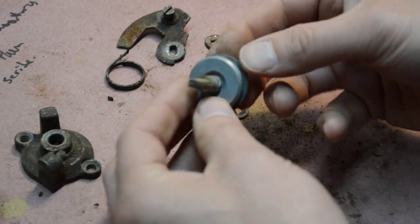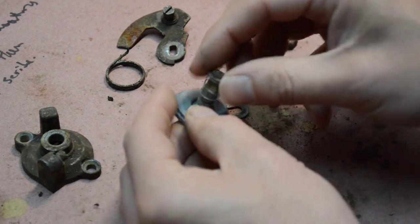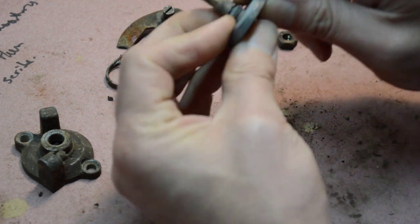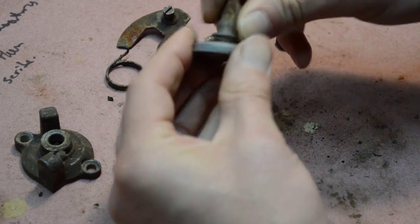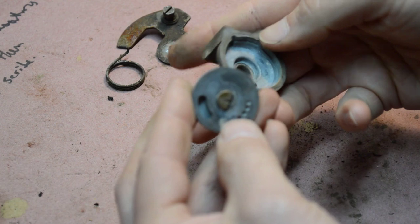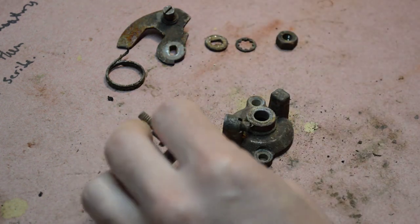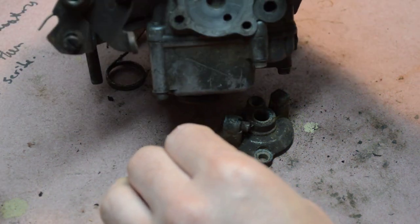And then from that point you are ready to reassemble it. So when you do that spring back on, get the clip in. Okay I have already forgotten which way this goes, so if you forget take a look at your carburetor.